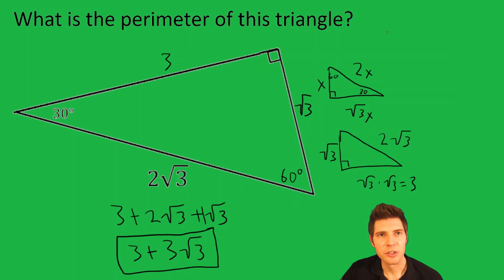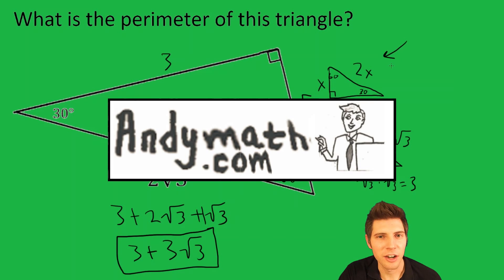So ultimately, we used the 30-60-90 triangle rules. If this makes sense, please like and subscribe. Check out andymath.com for more videos and study guides. I'll talk to you guys soon.